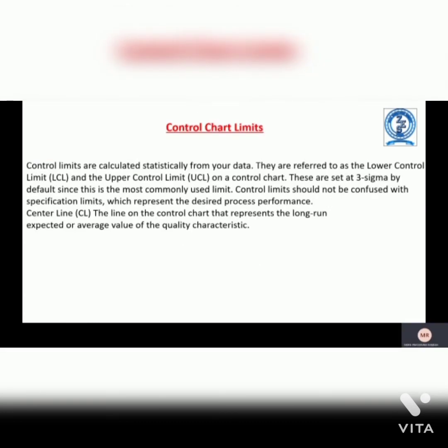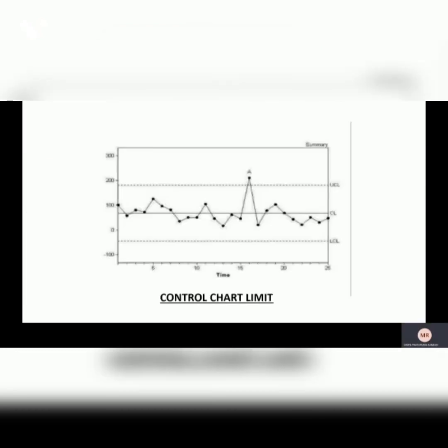What is a control chart limit? Control limits are calculated statistically from your data on a control chart. They are referred to as the lower control limit and the upper control limit. These are set at 3 sigma by default, since this is the most commonly used limit. Control limits should not be confused with the center line, which is the line on a control chart that represents the long-run expected average value of the quality characteristic.